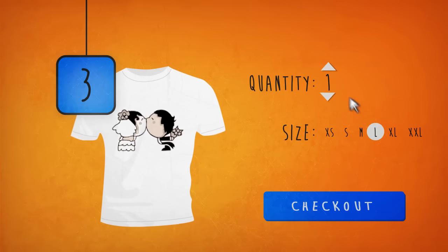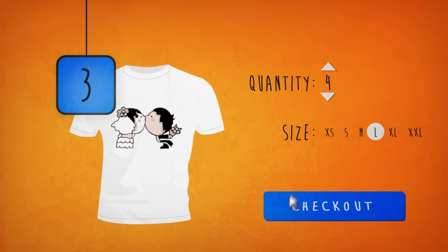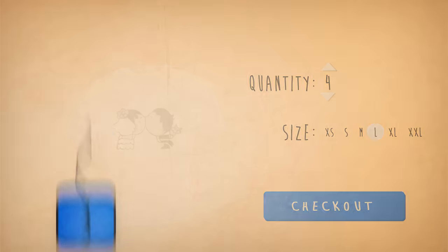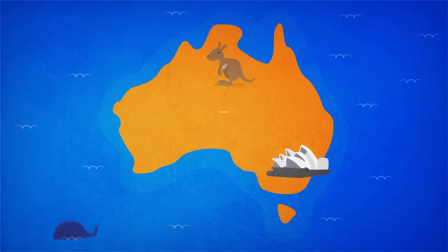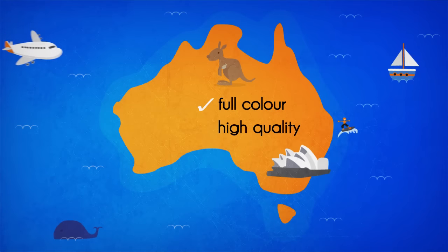Lastly, confirm the sizes and number required, check out and T-Junction handles the rest. Everything is printed right here in Australia with full color, high quality prints.